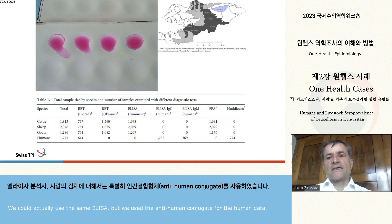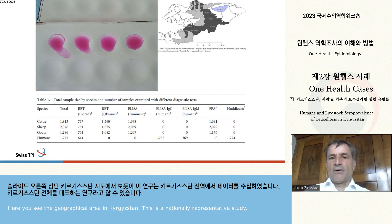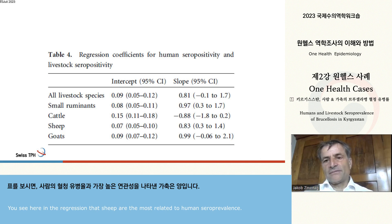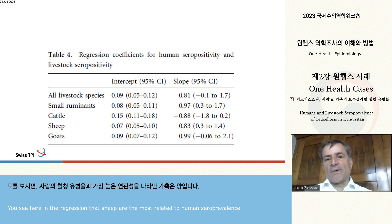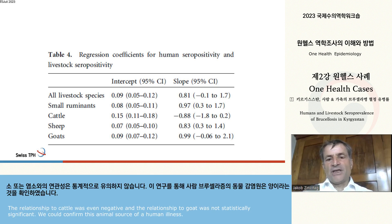We could actually use the same ELISA, but we used the anti-human conjugate for the human data. Here you see the geographical area in Kyrgyzstan — this is a nationally representative study. In the regression, sheep are the most related to human seroprevalence. The relationship to cattle was even negative, and the relationship to goat was not statistically significant.